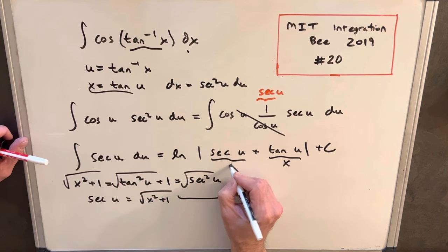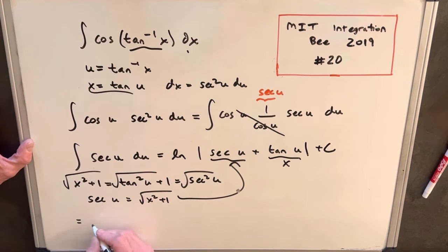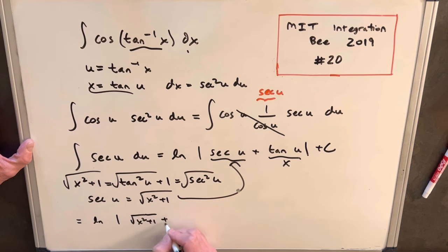So we can substitute that in here. So for our answer, we have ln absolute value square root of x squared plus 1 plus x plus C, and we're done.